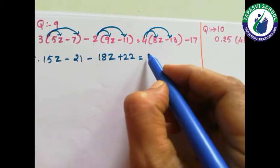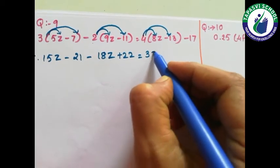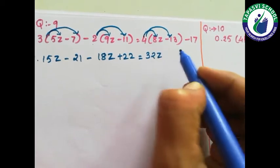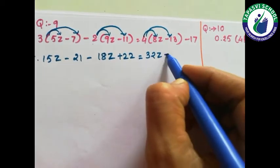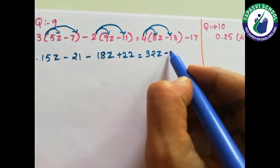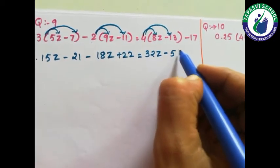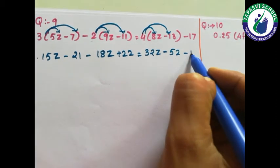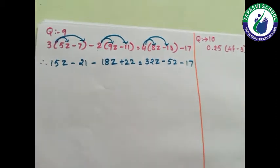Here: 4 eights are 32, here 13 fours are 52, minus 17.